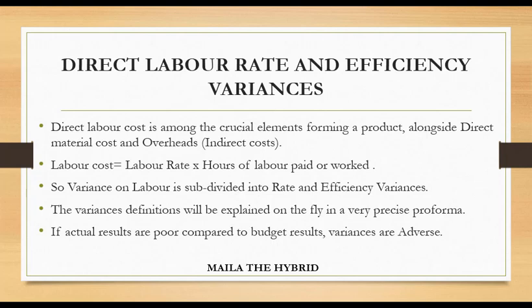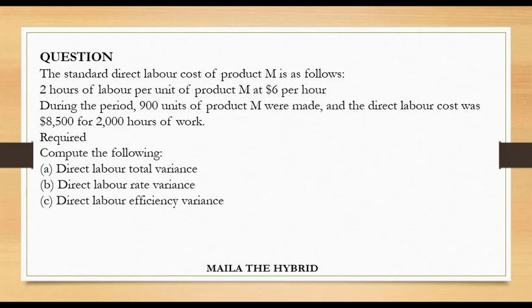In case actual results are poor compared to budgeted results, the variances will be adverse. And in case they are better, the variances will be favorable. In cost terms, we wish to incur less costs, contrary to revenue terms where we wish to earn more than expected. Let's go to the question directly, and then we will use a precise pro forma that we can apply to many other variances.